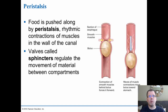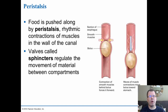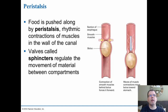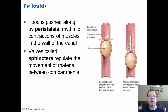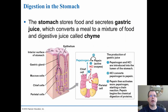Peristalsis involves rhythmic contractions of smooth muscles lining the esophagus, which constrict and contract to push food down toward the stomach in waves. The esophageal sphincter relaxes as food comes down, allowing it to enter the stomach. Some people develop heartburn where stomach acid works back through the sphincter, which can damage the esophagus and the sphincter itself with chronic exposure.